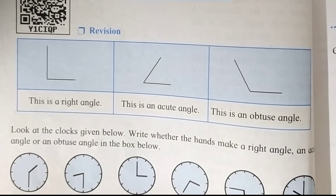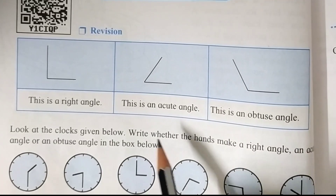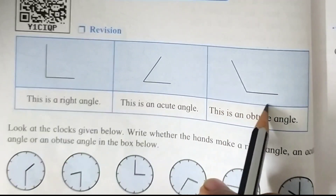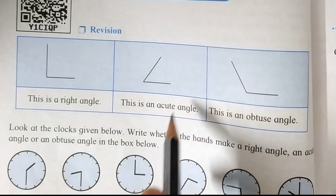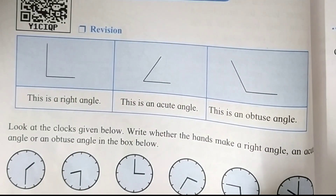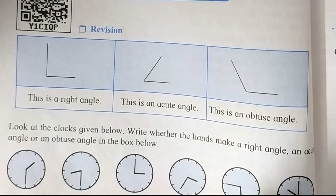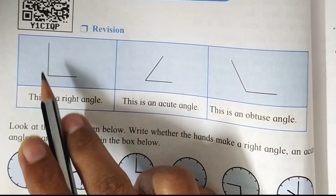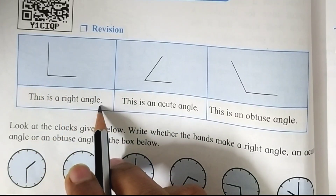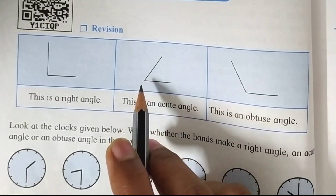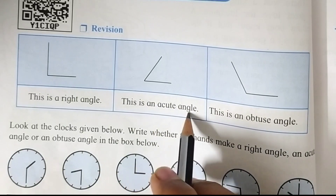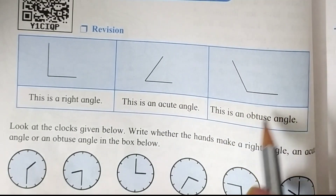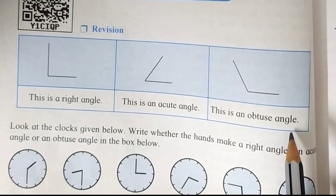Now, let's turn to angles. You can see here they give us three figures of angles for revision. We learnt them in our fourth standard. We know that this type of figure is called a right angle, this type is called an acute angle, and this figure is known as an obtuse angle.